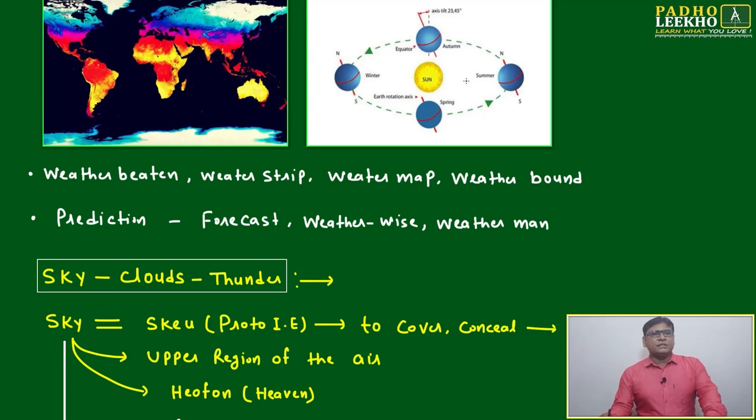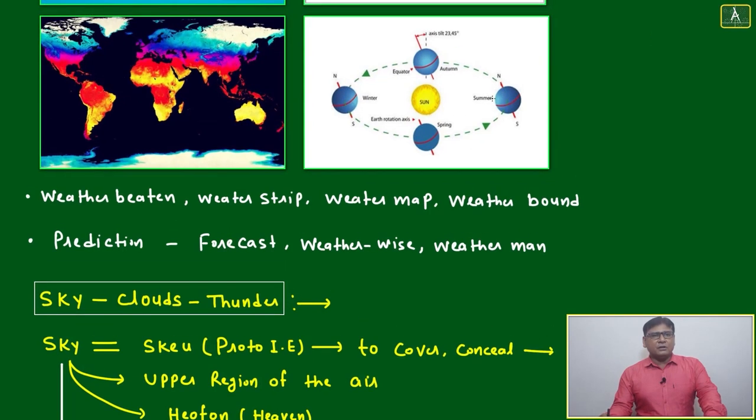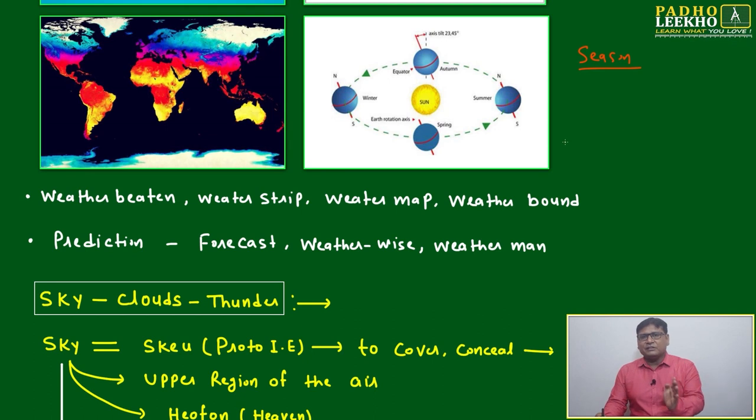Based on the position of the Earth, season will come. Season depends on the movement of Earth. Now you are able to distinguish climate, weather, and season. Season depends on the movement of Earth.